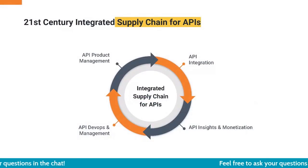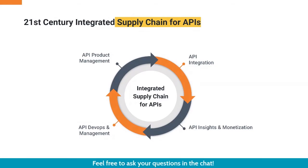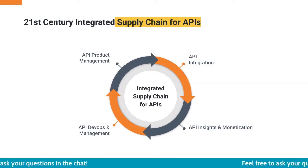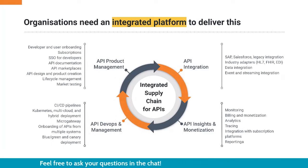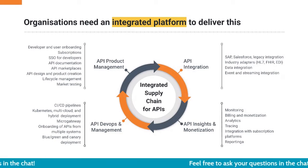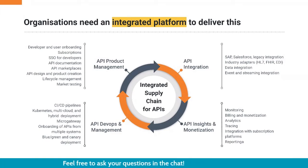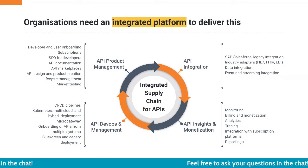This is how the API lifecycle — the complete API supply chain — looks: it's a circle that goes back and forth, getting feedback and continuously improving. To build that, you need a complete API lifecycle management platform. When you are picking an API management platform, make sure all these capabilities are provided: API integration, API insights, API DevOps, and API product management.